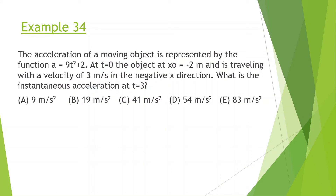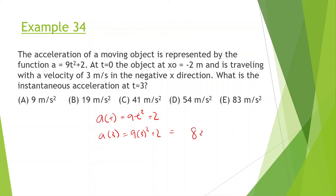Let's look at this example. Same object with acceleration a = 9t² + 2, position initial = −2 meters, and velocity of 3 m/s in the negative x direction. What is the instantaneous acceleration at t = 3 seconds? This is straightforward — just plug into the acceleration function: 9(3²) + 2 = 81 + 2 = 83 meters per second squared.